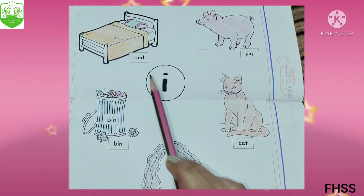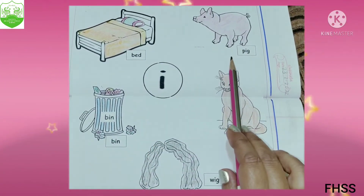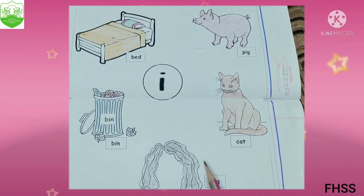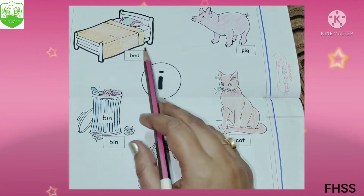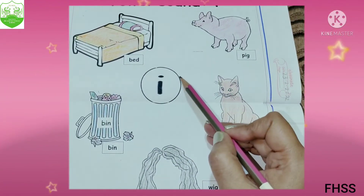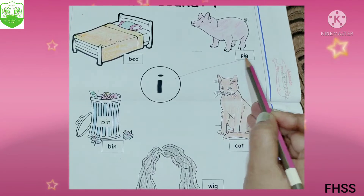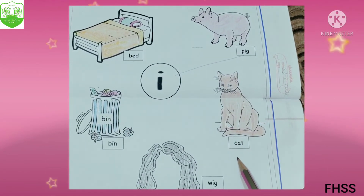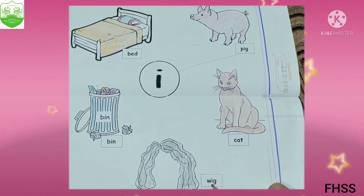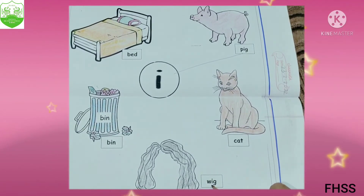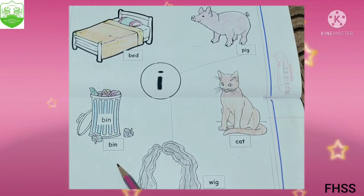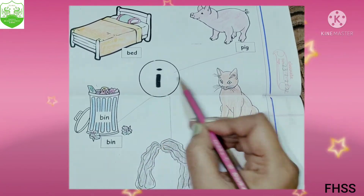First we will read the words: bad, pig, cat, wig, bean. Now bad is I sound word? No. Pig is I sound word? Yes. So we will match it. Cat is I sound word? No. So we will not match it. Wig is I sound word? Yes. So we will match it. Bean is I sound word? Yes. So we will match it.